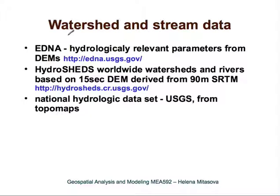There is a lot of information about watersheds and stream data available online from USGS — for example, the EDNA project, which provides hydrologically relevant parameters derived from digital elevation models. USGS hydrologic units are also available in digital form. Worldwide watersheds derived from a 15-arc-second DEM based on 90-meter SRTM data are also available. This concludes the section on flow tracing and watershed analysis; the next lecture will cover basics of hydrologic modeling and erosion modeling.